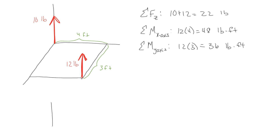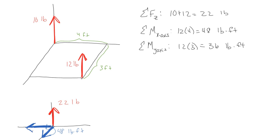So that means if we recreate this and get rid of the plate entirely, we could put a 22-pound force right there. Then we make sure that we have a positive moment about the x-axis, which needs to be 48. And then we also need a negative moment about the y-axis — pointing it backwards to show it's negative — and that's going to be 36 pound-feet. Those two systems are equivalent.